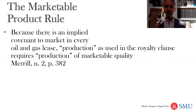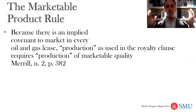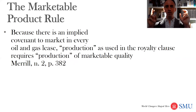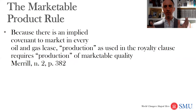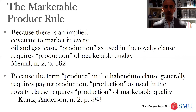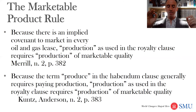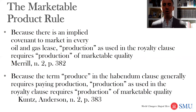So the marketable product rule — where does it come from and what are its advantages and disadvantages? One set of reasoning says: there's an implied covenant in every oil and gas lease to produce, and that means production of marketable quality. So production means you have to have a product — something that somebody will buy — and therefore you have to put it in marketable condition.